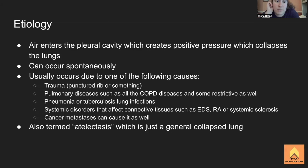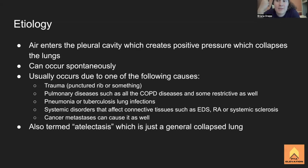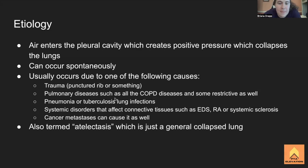One cause of pneumothorax is trauma from a punctured or fractured rib. The rib breaks and punctures the lung like popping a balloon — it becomes a flat pancake. This actually happened to my hairdresser in a motorcycle accident; he flipped over the handlebars when a deer came out of nowhere, fractured ribs, but he's doing fine now.